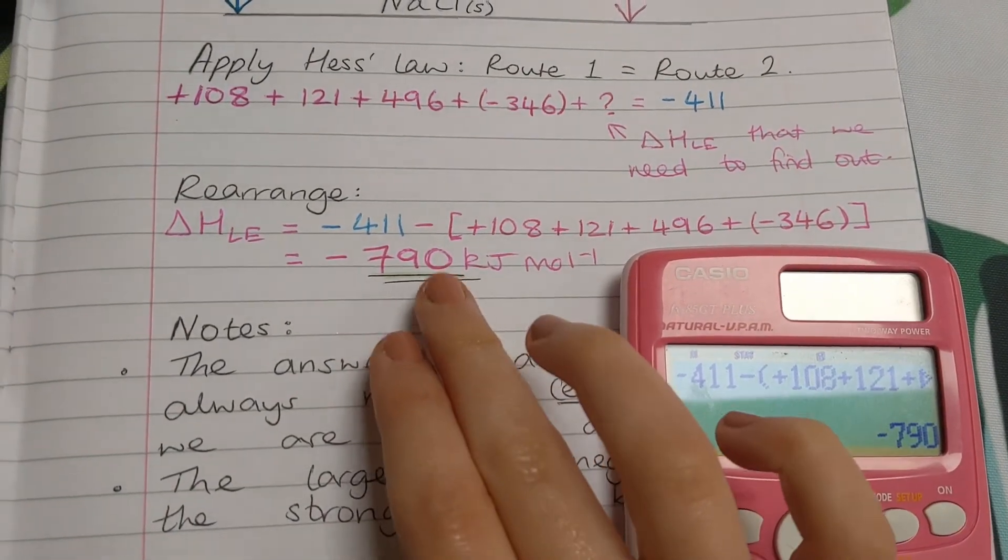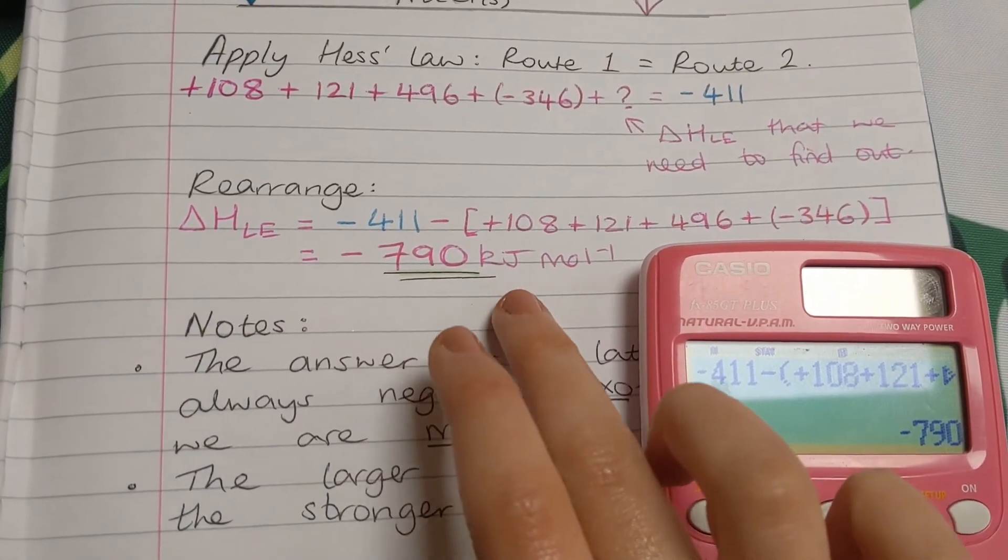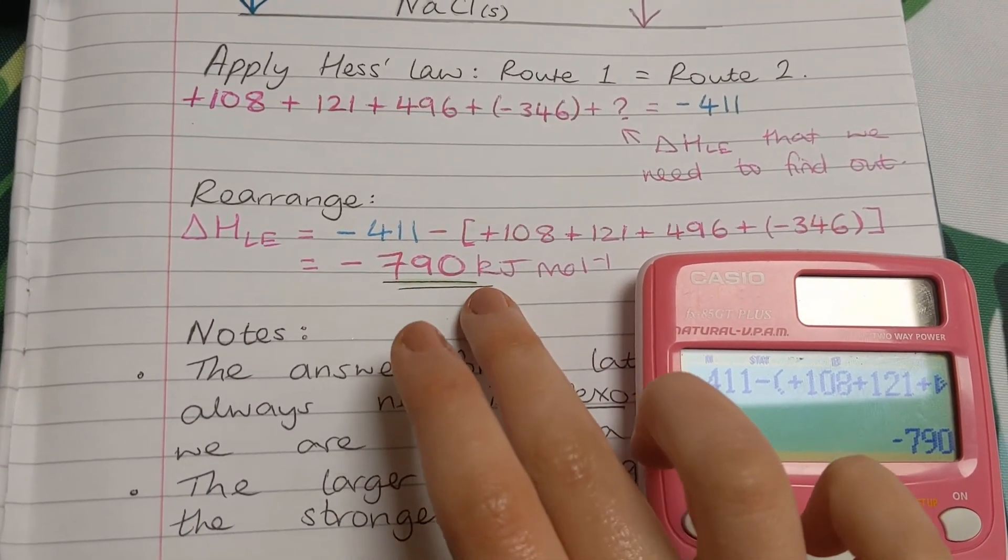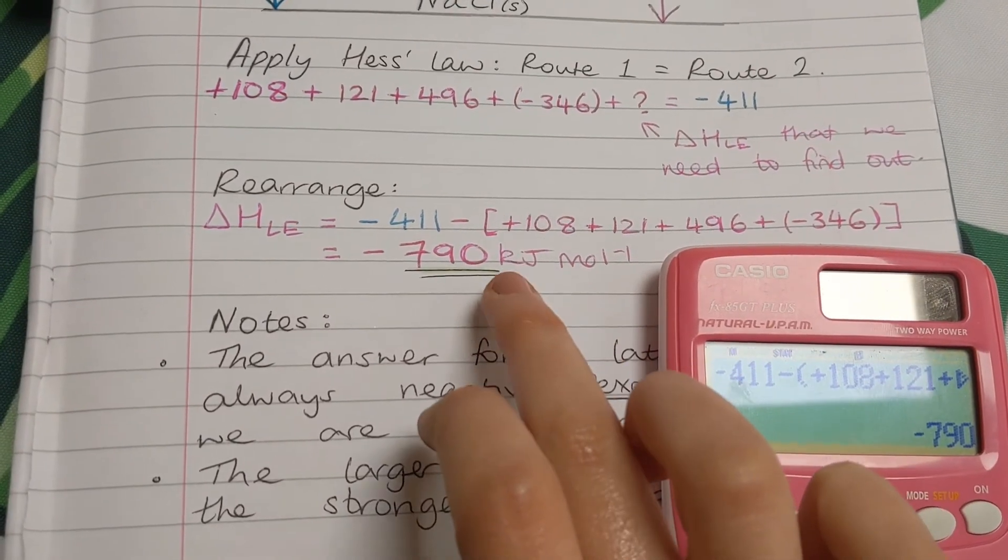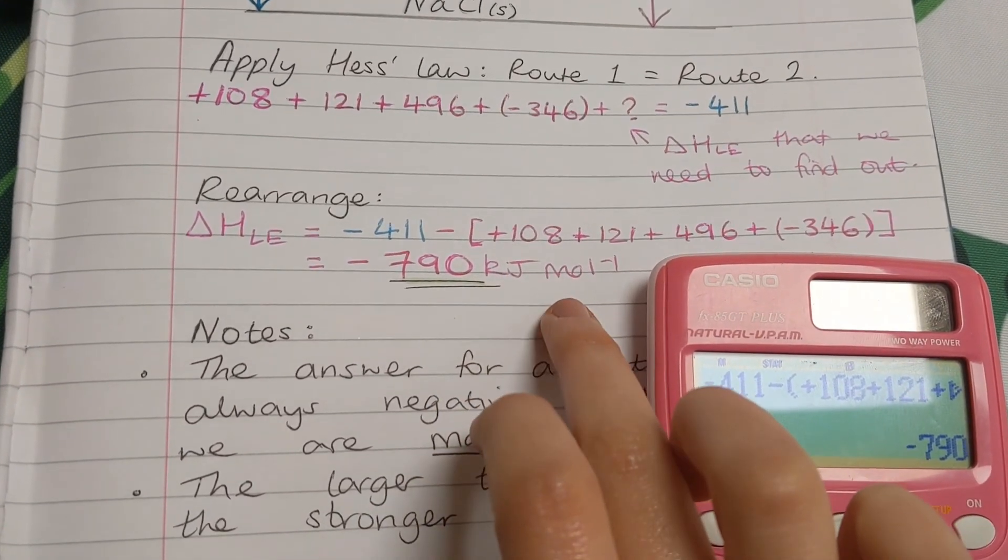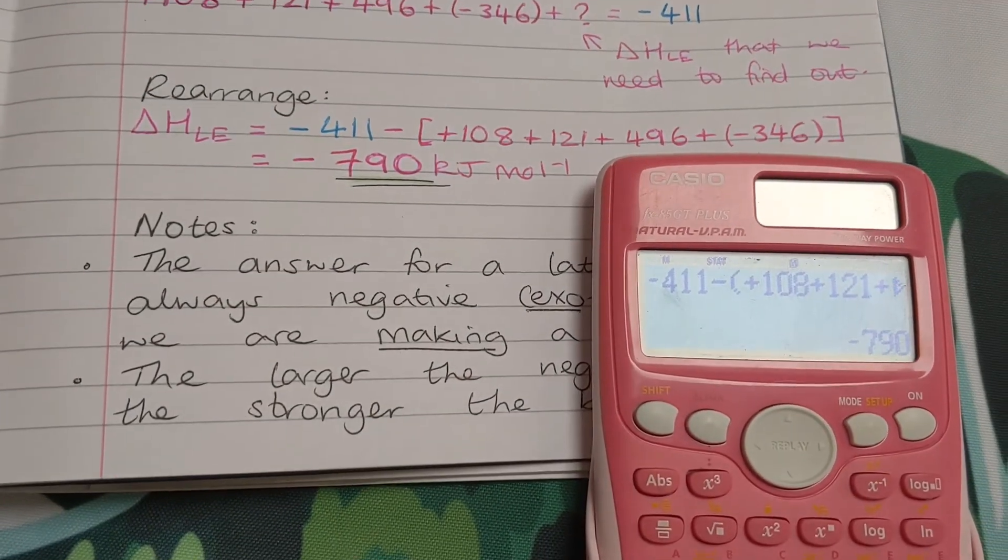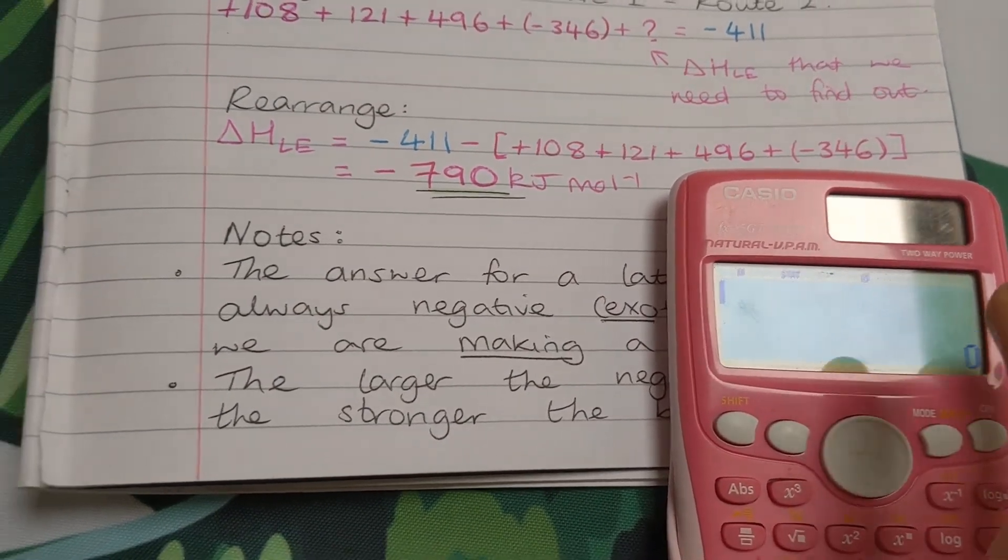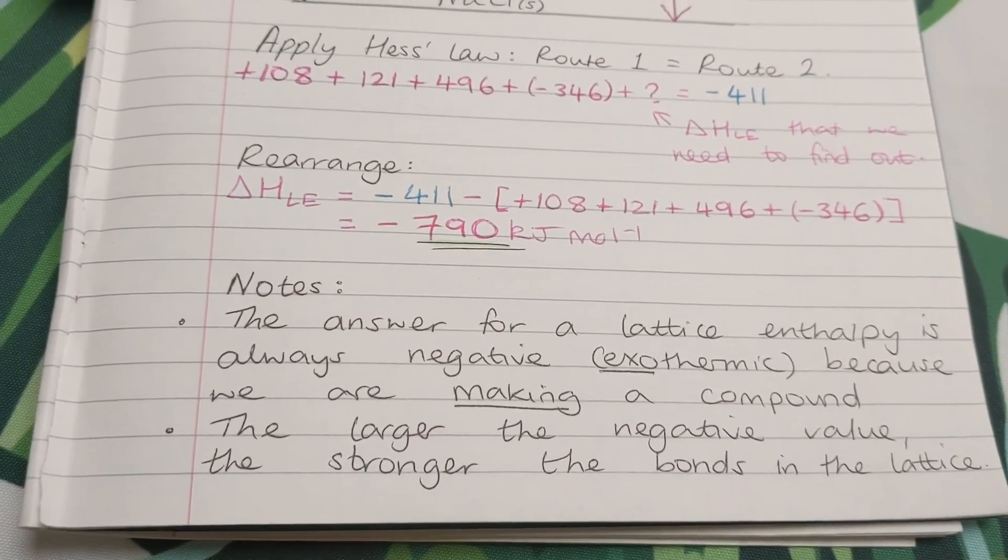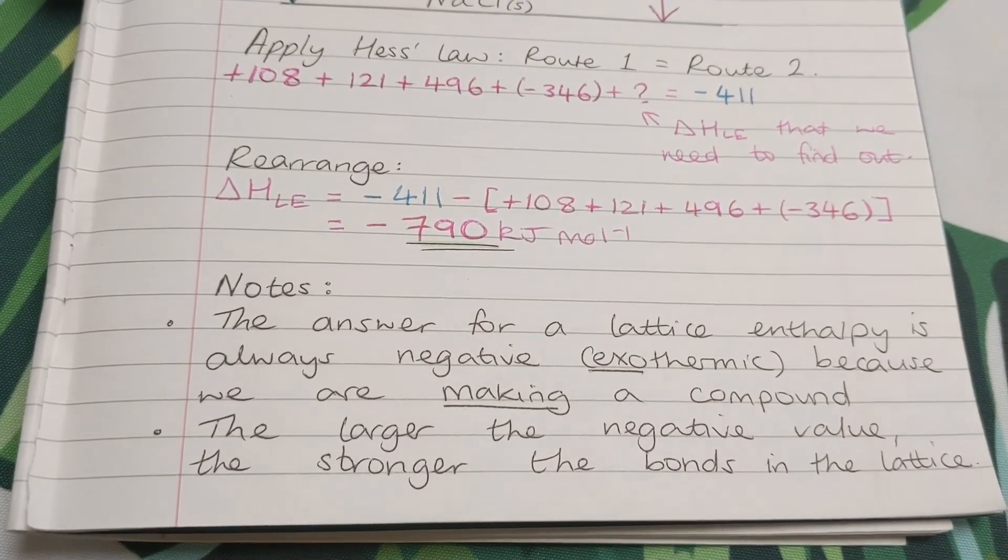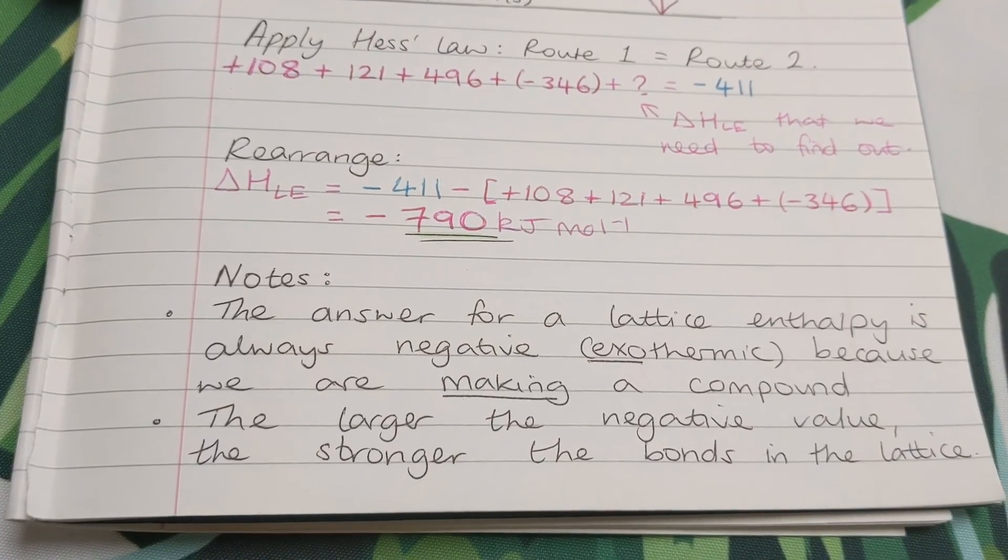And the units of an enthalpy change are kilojoules, so an amount of energy per, minus means per, mole. So an amount of energy per amount of a chemical compound. So I'll pop that answer in there. Now, what does this answer tell us? It's negative. So that means that it's an exothermic change. It releases heat. It's energetically favourable to do.